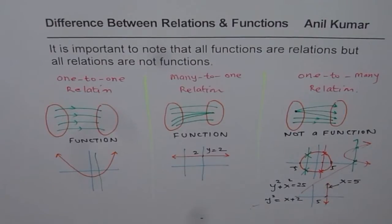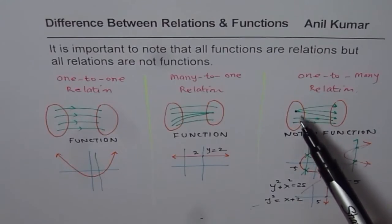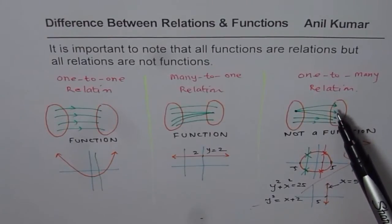You could identify relations which are not functions by looking at them. Graphically, vertical line test. In mapping diagram, a point in the domain is mapped to more than one element in the range.